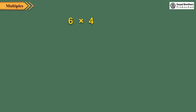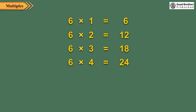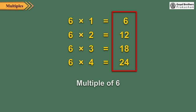Similarly, multiples of 6 are 6, 12, 18, 24, and so on. Thus, we can get the multiples of a number by multiplying it by 1, 2, 3, 4, and so on. Clearly, multiples of a number are endless.